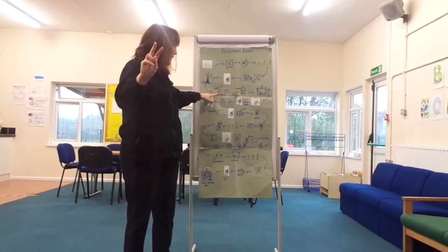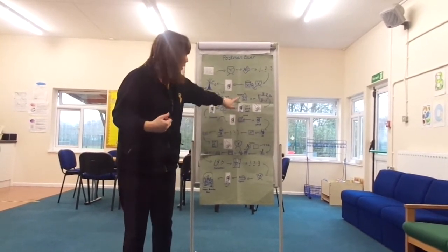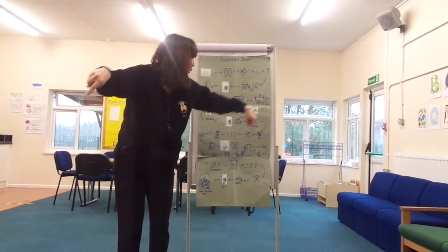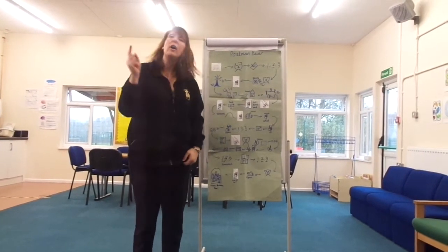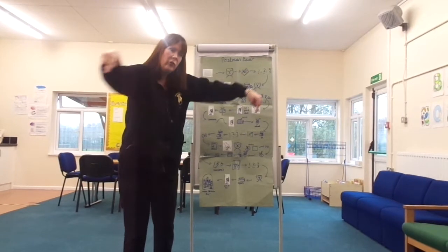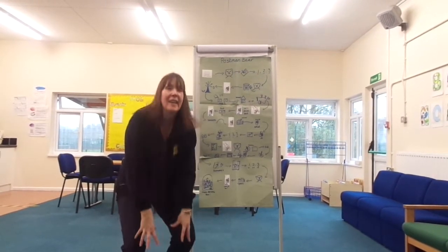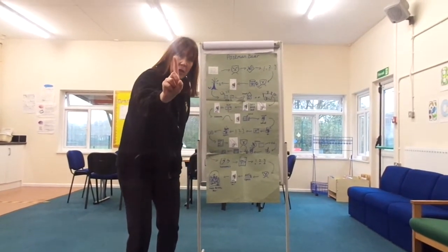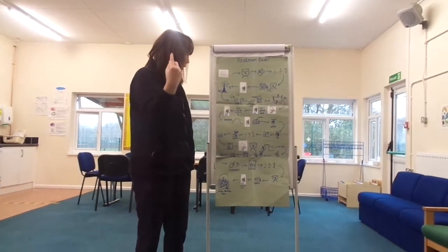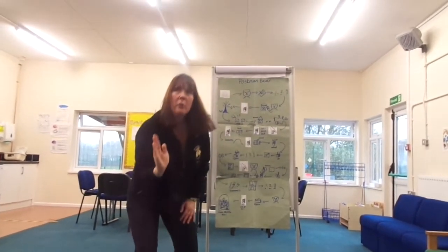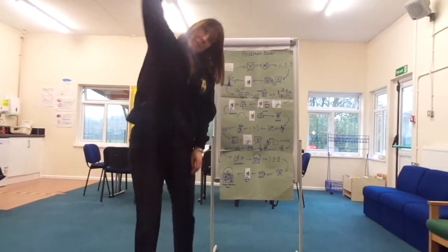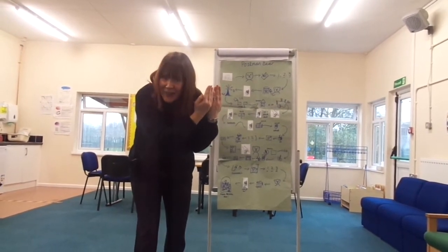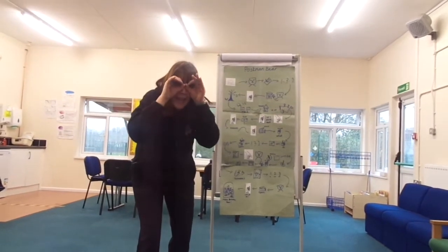Only two letters left now. Who are they for? Someone's home is in the pond. Draw your big circle. Let's find out who. Whose home is in the pond? It's frogs. Can you bounce like a frog? How many letters are left? Just one letter left now. Who is it for? Someone's made a heap of earth. Who's behind the door? Can you show me? It's Mole.